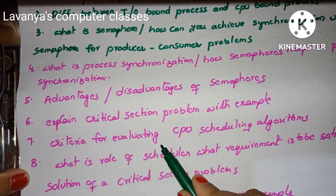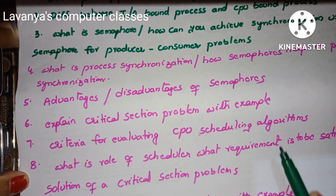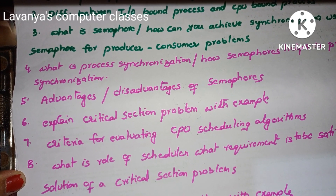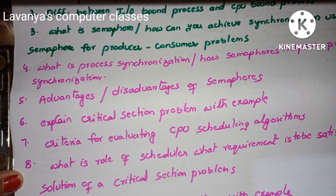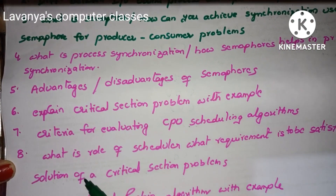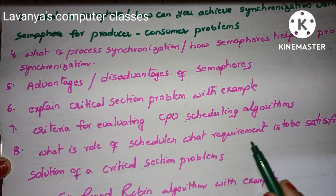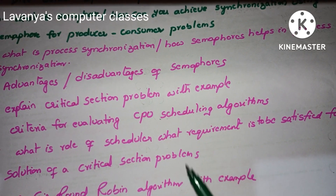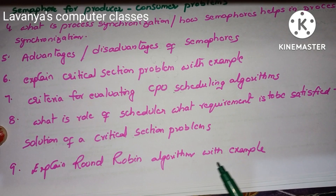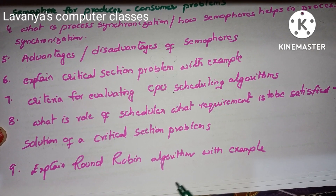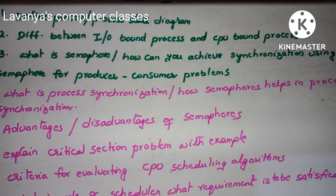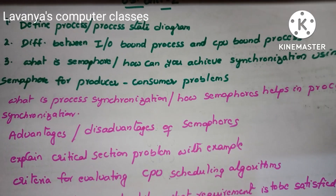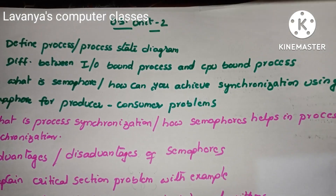Next, what is the criteria for evaluating CPU scheduling algorithm? CPU scheduling algorithms are very very very important. Read all the scheduling algorithms like round robin, first come first serve (FCFS), shortest job first. Next, what is the role of scheduler? What requirements are to be satisfied for the solution of a critical section problem? Explain round robin algorithm with example — not only round robin, any scheduling algorithm explain with example. In unit 2, semaphores, scheduling algorithms, and critical section problems are the important topics.